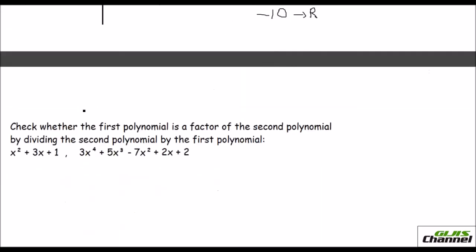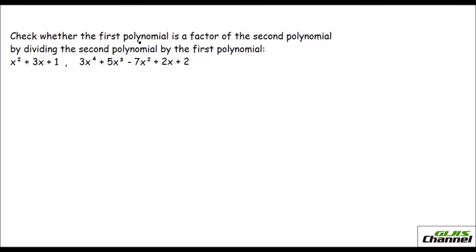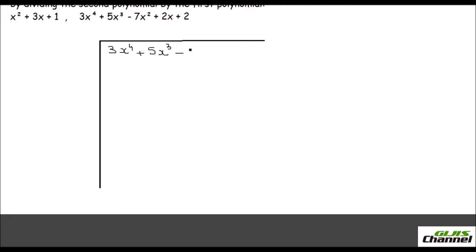So with this let us do one more problem. They ask you to check whether the first polynomial given here is a factor of the second polynomial. Under the long division method, what you need to do is divide the bigger polynomial by the first one and show that the remainder is 0. If you get the remainder as 0 you can say it is a factor, otherwise it is not. See that you don't miss any powers — here it has all powers so you needn't fill in with 0, otherwise you should.